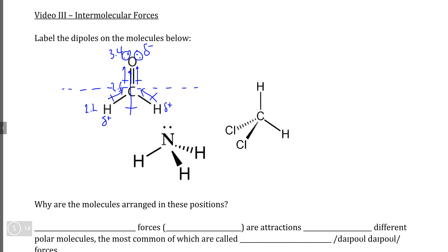If we look at NH3, we can write the electronegativities of hydrogen and nitrogen. This molecule is actually drawn in 3D. The most important thing to take away is that the nitrogen-to-hydrogen bonds are not symmetrical, and this will be important when we look at the dipole vectors. There is a fairly large difference in electronegativity — 3.0 minus 2.2 is 0.8 — and because nitrogen has a higher electronegativity, all of the dipole vectors are going to point towards nitrogen.